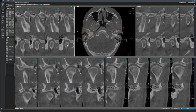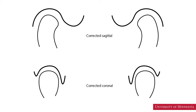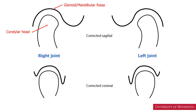There are several features I would like to evaluate on the corrected sagittal and corrected coronal slices. These cartoons show the corrected sagittal and corrected coronal views of the temporomandibular joints. Let us identify components of the temporomandibular joints as seen on these cartoons representing the CBCT scan — the right and left temporomandibular joints. The condylar head is the part of the mandible.